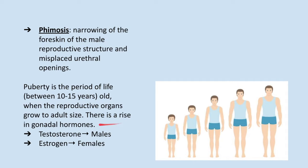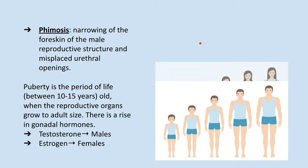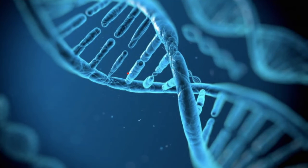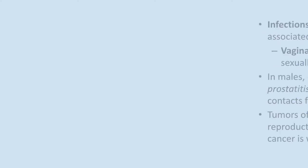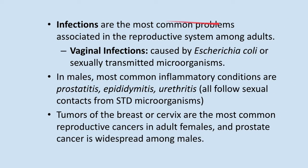Puberty is the period of life when the reproductive organs grow to adult size. Changes in puberty are similar in sequence, but the age at which they occur differs per individual. In this section, we will be talking about reproductive system diseases. Infections are the most common problems associated with the reproductive system among adults. Vaginal infections are one of the most common infections among women, caused by Escherichia coli or sexually transmitted microorganisms.